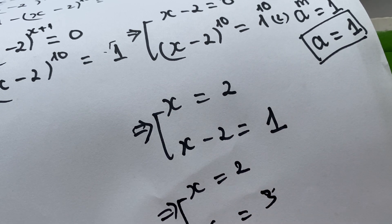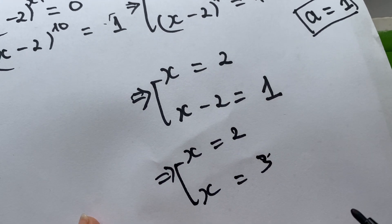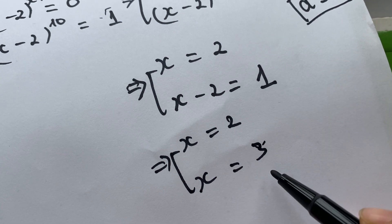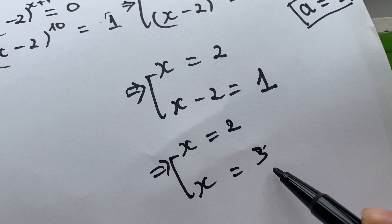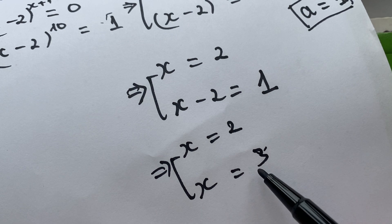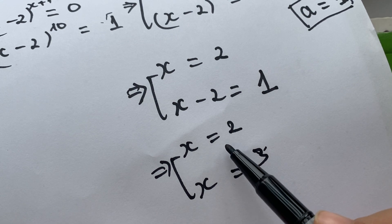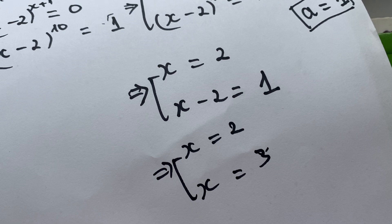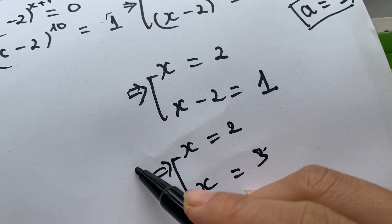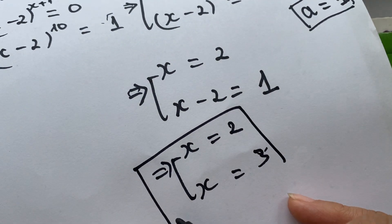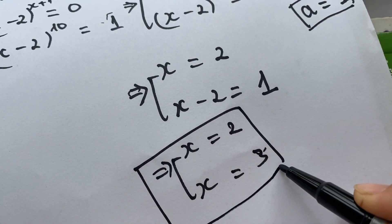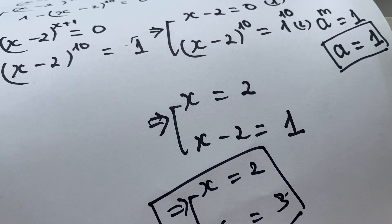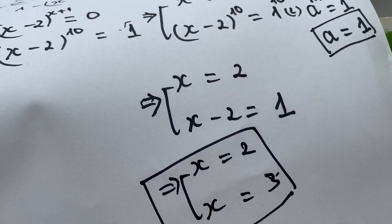x equals 2 or x equals 3 — these are the values of x. Therefore, we have two values: x1 equals 2 and x2 equals 3. Thank you for watching my video, don't forget to subscribe to my channel. Love you all, bye bye!